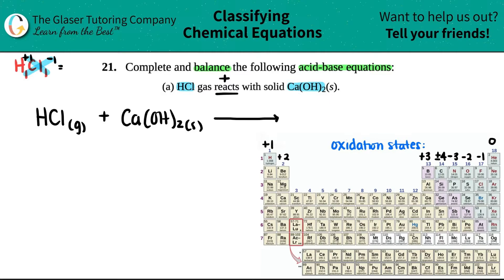So H was a plus one. And you know what? Maybe I'll just write it down here. I'm going to say H was a plus one and Cl was a minus one. I don't care how many of each you have. Now let's do the same thing for Ca(OH)2. Let's do the crisscross method to find out the charges.